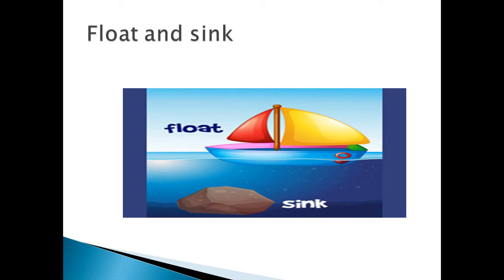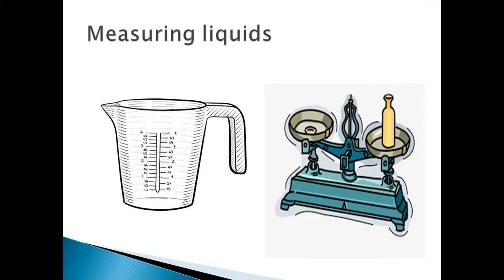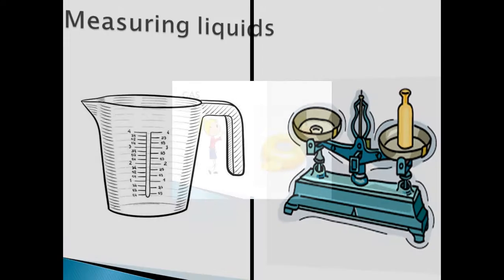Look at this picture — which one can float and which one sinks? The ship can float on liquid, and the rock sinks in water. We can also measure liquid using a measuring cup to find out the volume of the liquid. We can also use a balance to measure the mass of liquid.